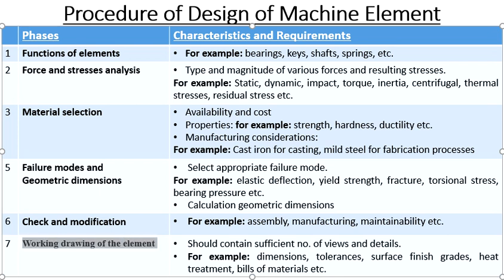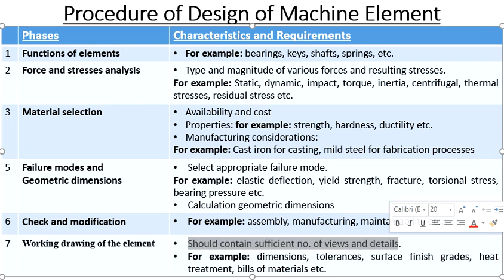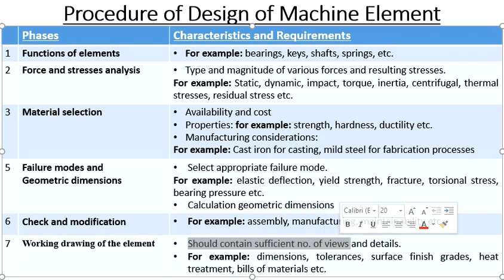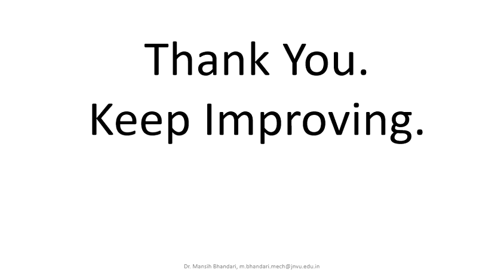The last stage is the working drawing. Since we have finalized the geometric dimensions and checked them for assembly, manufacturing, and maintainability, we finalize the working drawing. The working drawing should clearly show all views and details of the components, since the component is manufactured based on it. It should clearly contain dimensions, tolerances, surface finish grades, heat treatments, and bills of materials. This is the last stage of the machine design process, though at each stage we may need to make changes and improvements. Thank you. I hope you have understood the process of machine design. We will discuss the design of individual elements later on. Keep improving.